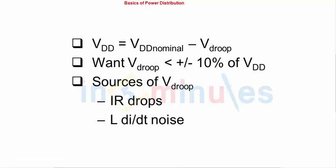Now ideally my VDD should be equal to VDD nominal minus some drop. Now there are two types of drops. This drop should be less than or equal to 10% of VDD. The sources of drop are IR drops and LDI by DT noise. Now what is this? Let's understand.